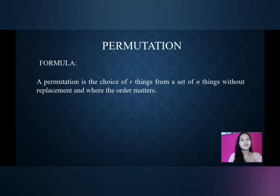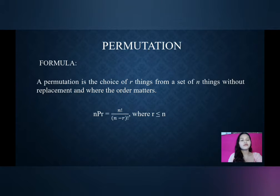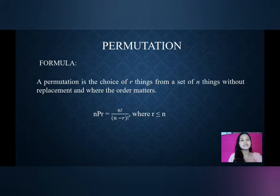Formula: A permutation is the choice of r things from a set of n things without replacement and where the order matters. So, our formula is nPr is equal to n factorial over the quantity (n minus r) factorial, where r is less than or equal to n.